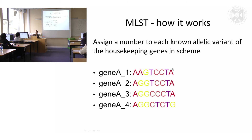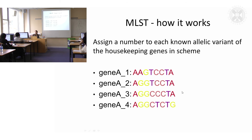If each of these is a different strain of the same species, you can see there are slight mutations — slight differences within this gene. It's the same gene, just slightly different between the different strains of bacteria you're looking at. We call these allelic variants, and you use this to look at how the bacteria have evolved and diversified.